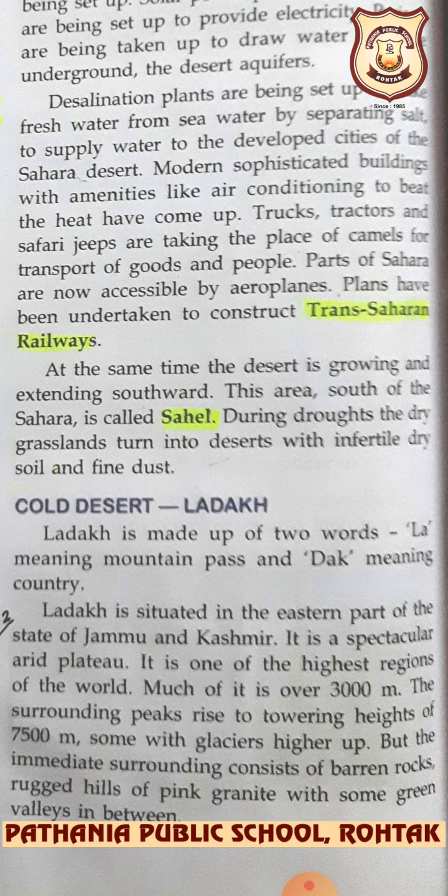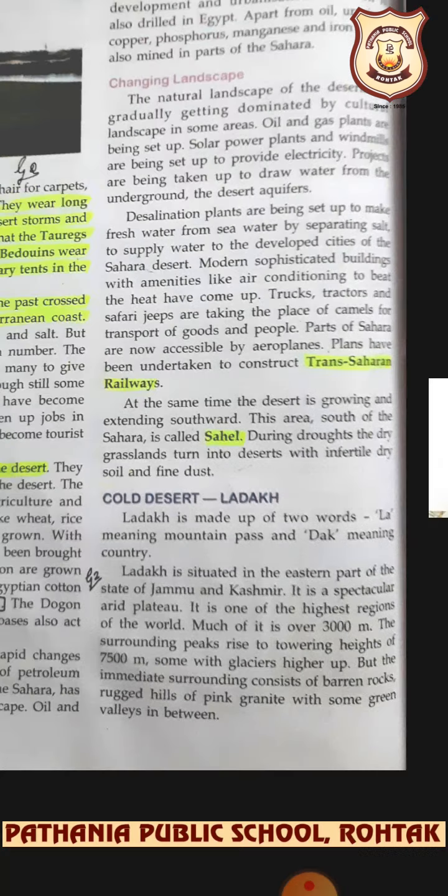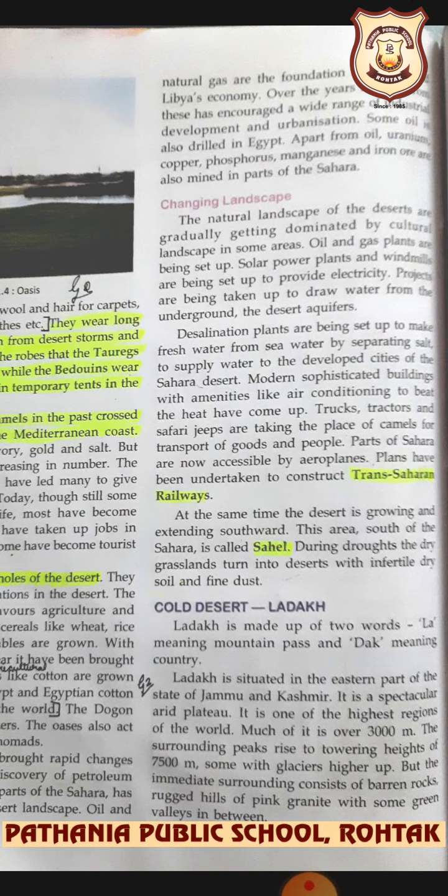Ladakh is bordered to the southwest by the main Himalaya range — the Greater Himalayas. You can also see the Gangotri Glacier and the snow fields of the Himalayas as you approach Ladakh by aeroplane. To the north, parallel to the Himalayas, is the Zanskar range, and the Ladakh range lies to the north of Leh itself, which has no major peaks.